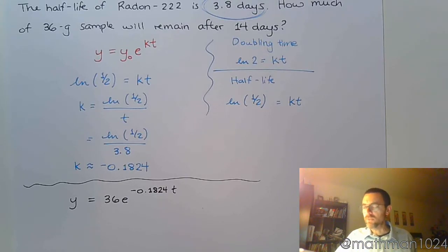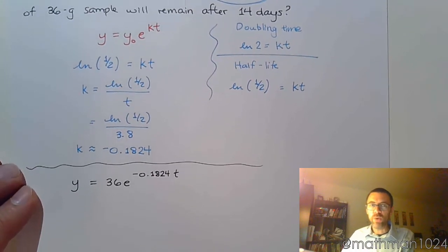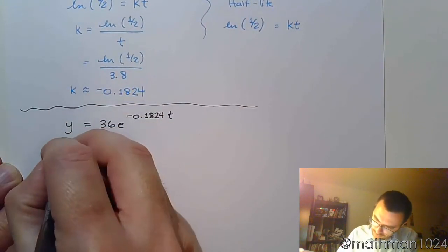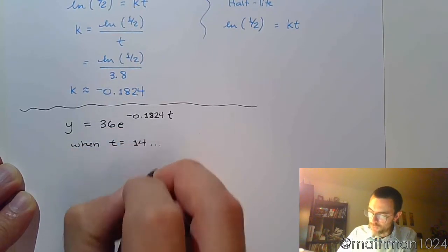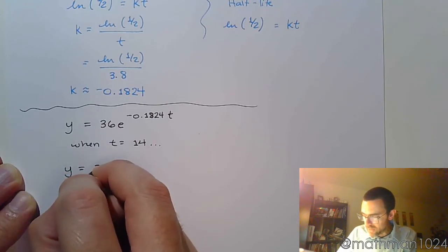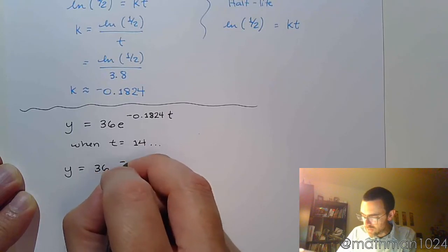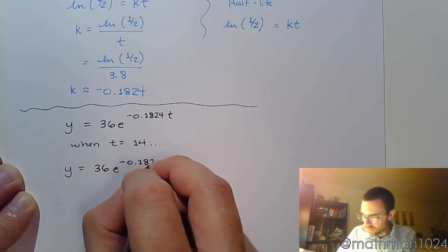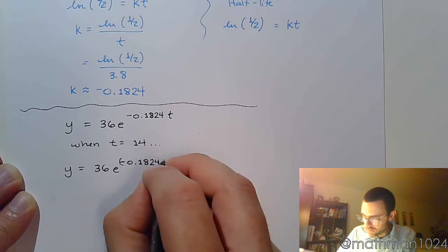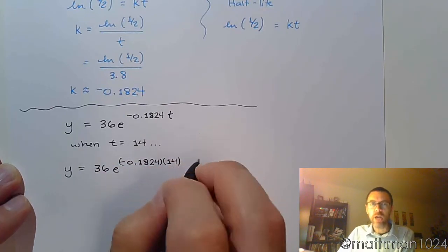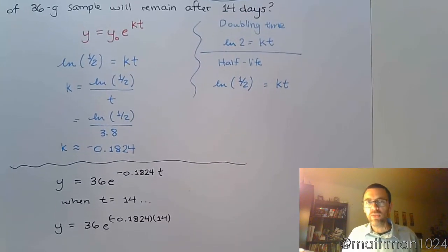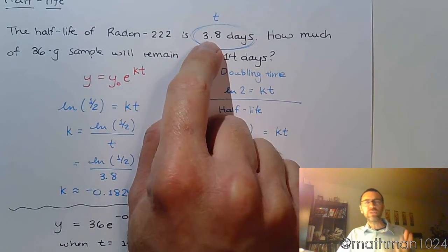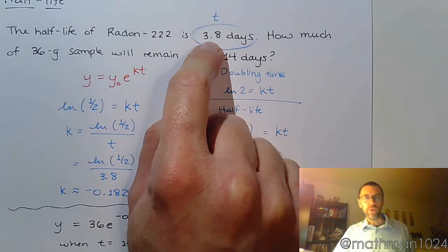Well, the question here says, how much is going to be left after 14 days? And so now we just evaluate this when t equals 14. So when t equals 14, we're going to have 36 e to the negative 0.1824 times 14. Now before we just kind of dive in and say what the answer is by plugging it into the calculator, I want us to think about it. The half-life is 3.8 days. So let's round, let's estimate. Let's say this is 4 days.